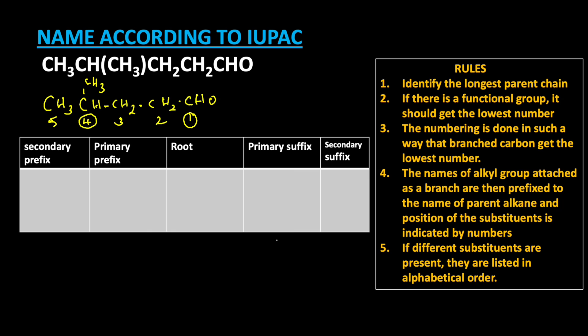The parent alkane is pentane, so the root word is 'pent'. Now come to the primary prefix: if there is a cyclic compound, the primary prefix 'cyclo' is used. But this compound is not cyclic, so the primary prefix is absent. Now come to the secondary prefix.